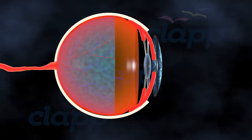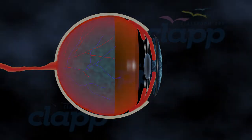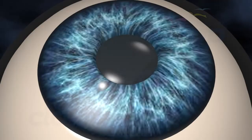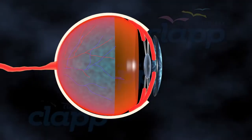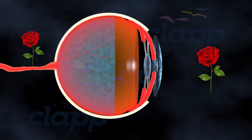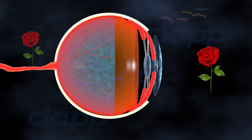As we age, the lens in our eyes becomes less flexible and transparent. This natural aging process can lead to the development of cataracts.